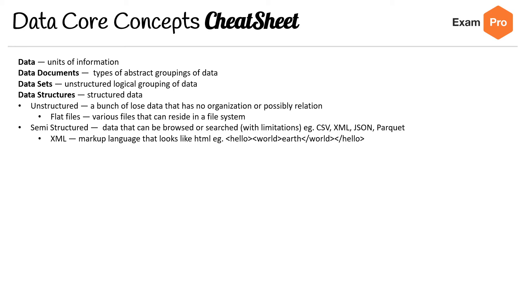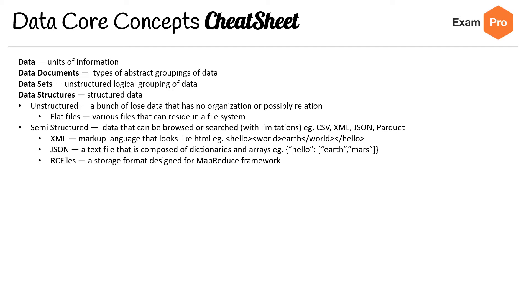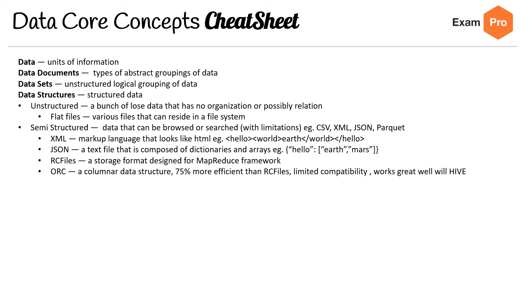XML files use markup that looks like HTML. For JSON, it's a text file composed of dictionaries and arrays. RC files are storage formats designed for the MapReduce framework — not something covered in the lecture content, but worth mentioning.